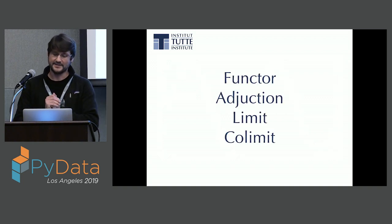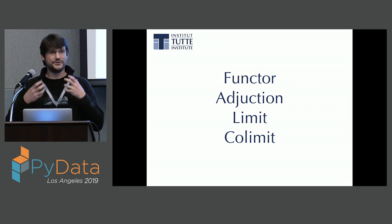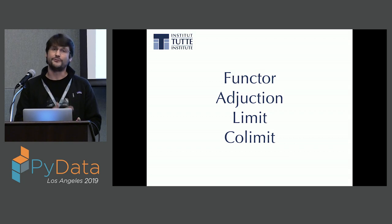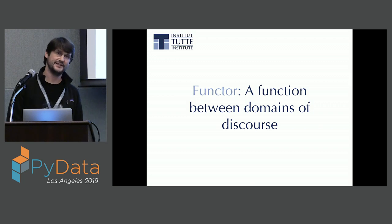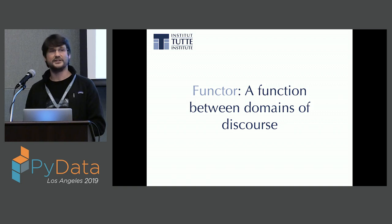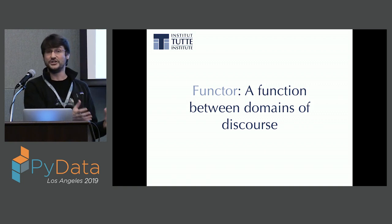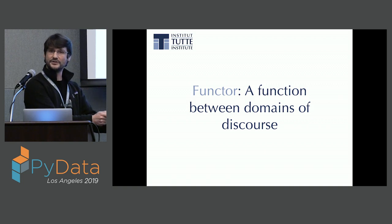Next I want to go through some language from math — underlying ideas that matter. I don't need you to understand the formal definitions, but I want to introduce these words and ways of thinking, because there's a rigorous formalism that makes these intuitive ideas actually true. What is a functor? It's essentially a function between domains of discourse. For example, taking the nerve of an open cover: we started with a topological space, which is continuous and complicated, and turned it into a finite combinatorial object. So we went from topology to combinatorics. Having a functor is a formal way of saying we can do this rigorously, not just hand-waving.